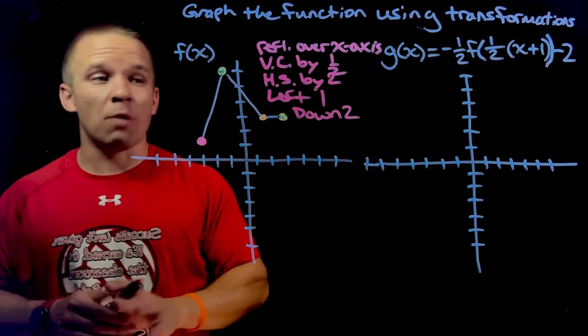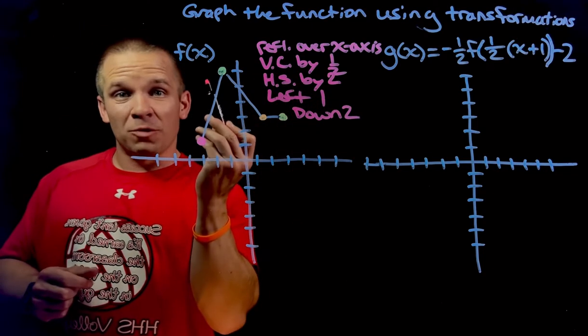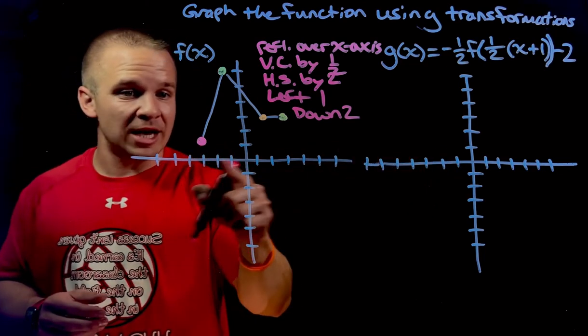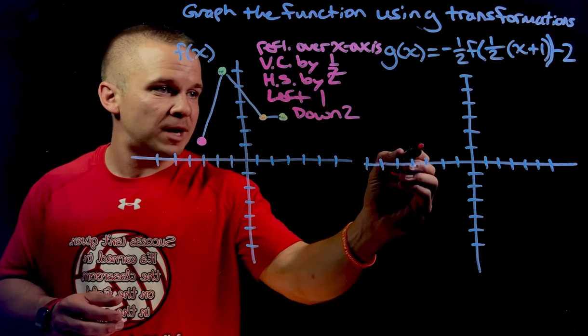That is a lot. All right, we're going to take it one point at a time, starting with this pink color right here for that point right there. Here's what we got to do. I got to start at what looks like negative three positive one, so negative three positive one. This is where I'm at.